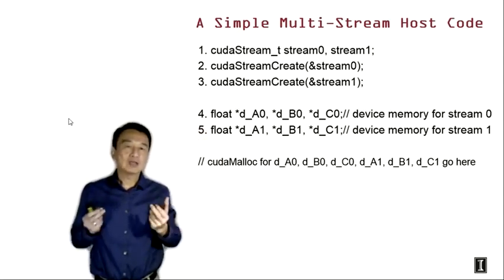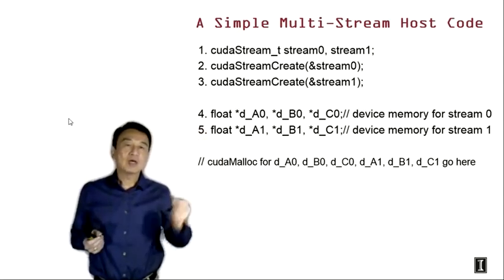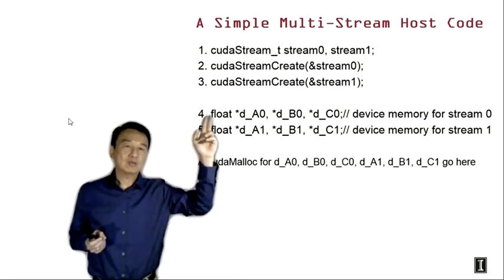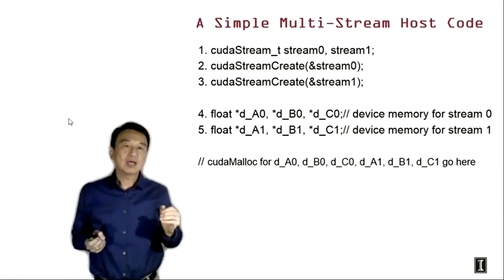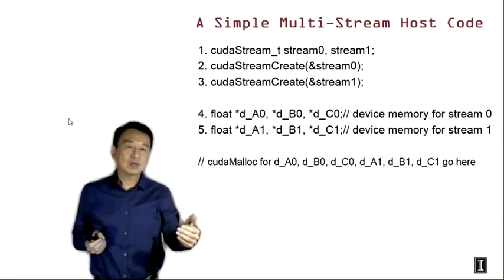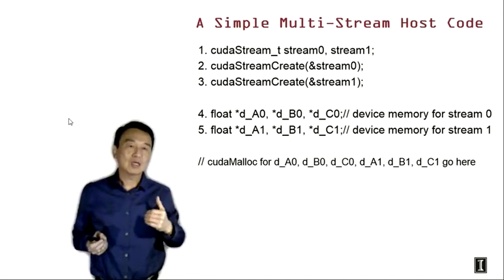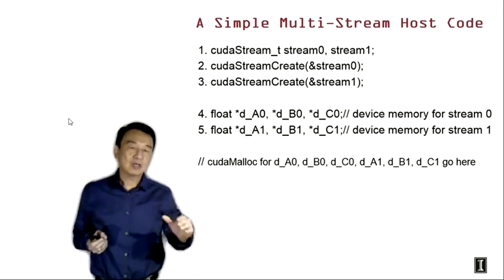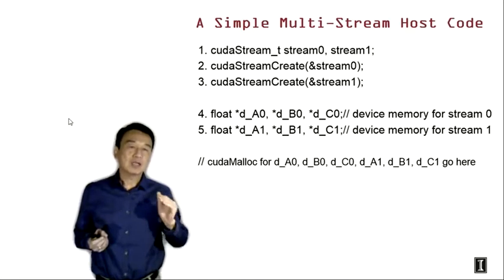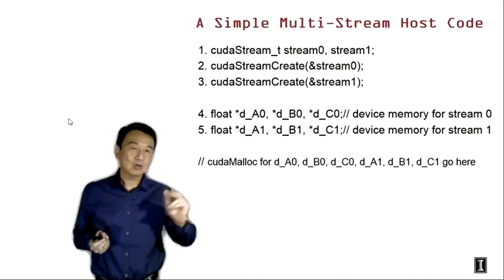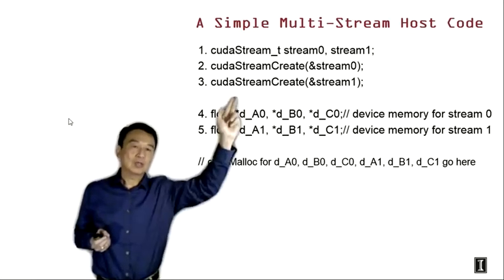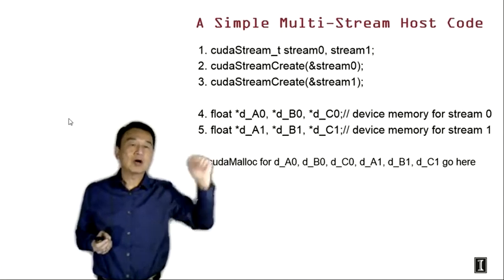Once we declare these two variables, we call cudaStreamCreate with the address of these variables. The create API call will generate a CUDA stream, generate all the appropriate queues, and then place the pointer to the stream into stream 0 and stream 1.